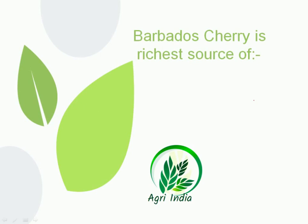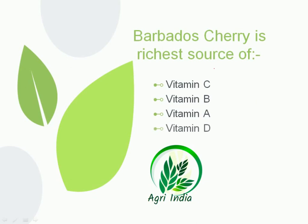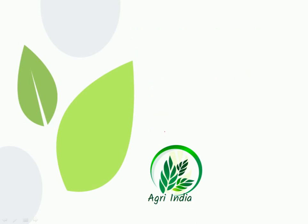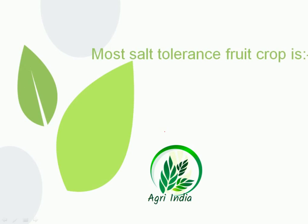Next question: Barbados cherry is the richest source of — options are Vitamin C, Vitamin B, Vitamin A, and Vitamin D. We get Vitamin C from Barbados cherry, so the first option is correct. Vitamin B is found in bael and some other crops. Vitamin A is obtained from carrot, and Vitamin D is obtained from sunlight.